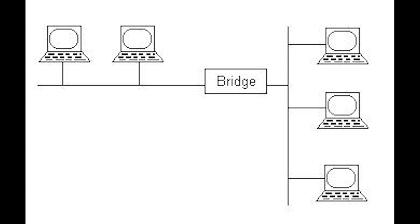Transparent bridging uses a table called the Forwarding Information Base to control the forwarding of frames between network segments. The table starts empty, and entries are added as the bridge receives frames. If a destination address entry is not found in the table, the frame is flooded to all other ports of the bridge.